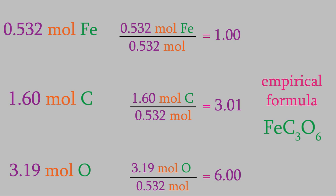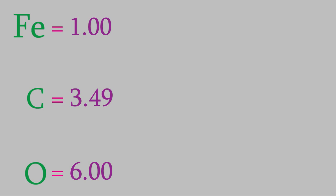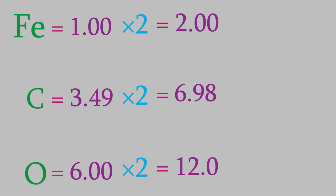That example worked out very well, but sometimes we're not so lucky. Suppose that after dividing by the smallest number in that last step, we got 1.00 for iron, 3.49 for carbon, and 6.00 for oxygen. This time, we didn't get three integers. The one for carbon is way off. But you'll notice that the number we did get for carbon is basically 3.5. We can change that to an integer by multiplying it by 2. If we multiply by 2, we have to do it for all three elements. So we end up with 2.00 for the iron, 6.98 for the carbon, and 12.0 for the oxygen. So our empirical formula is Fe2C7O12.